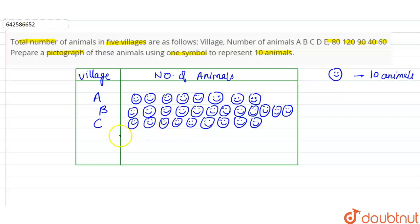So these are the pictographical representation of village C animals. Now village D, 40 animals, so 1 represents 10, 20, 30, and then 4, 40.